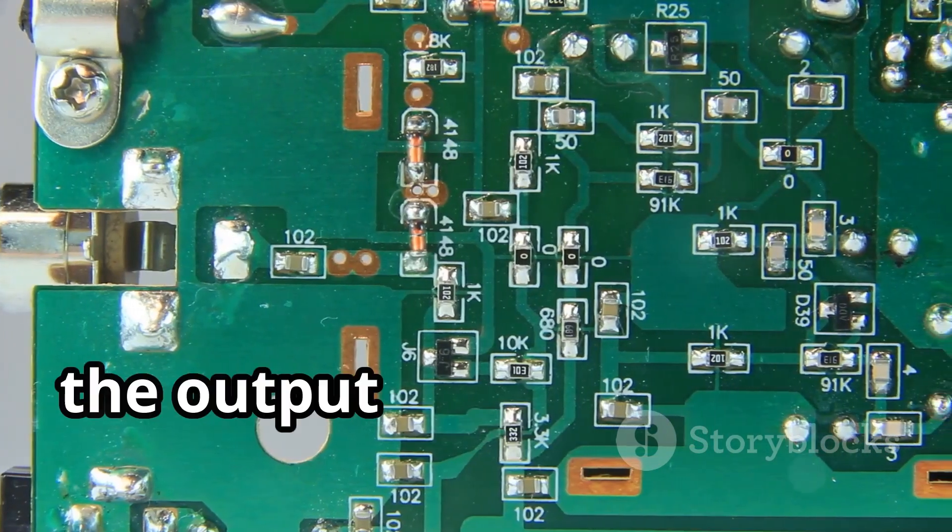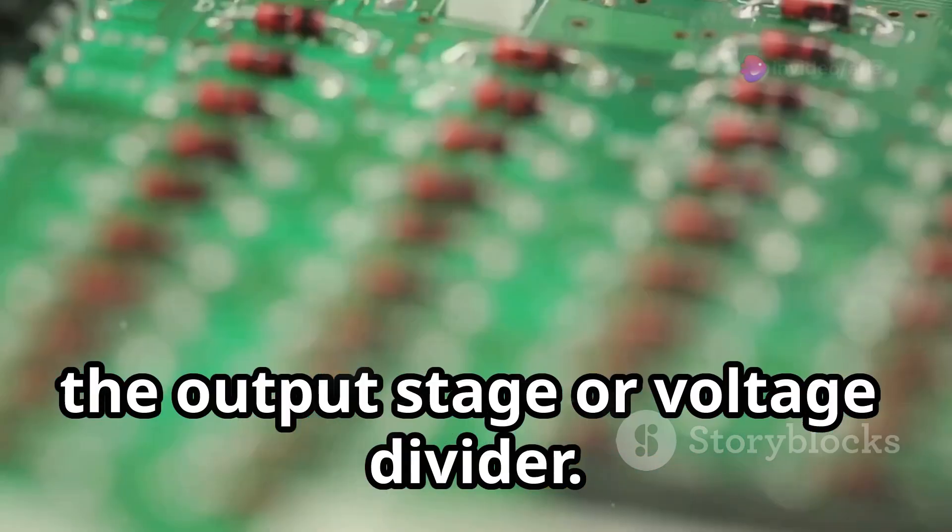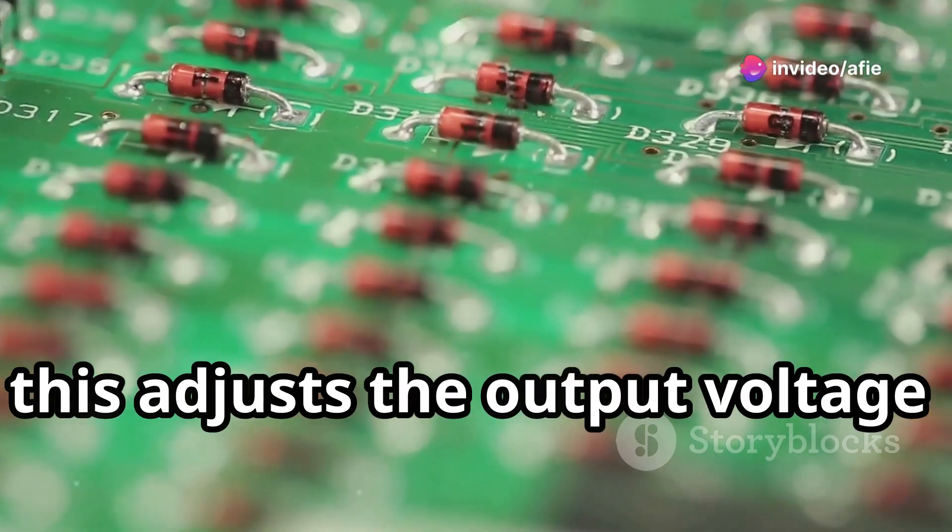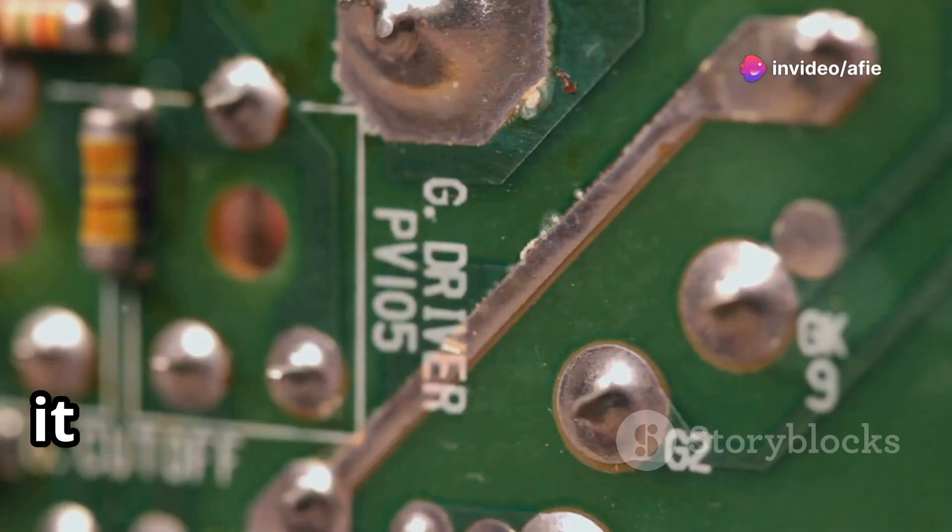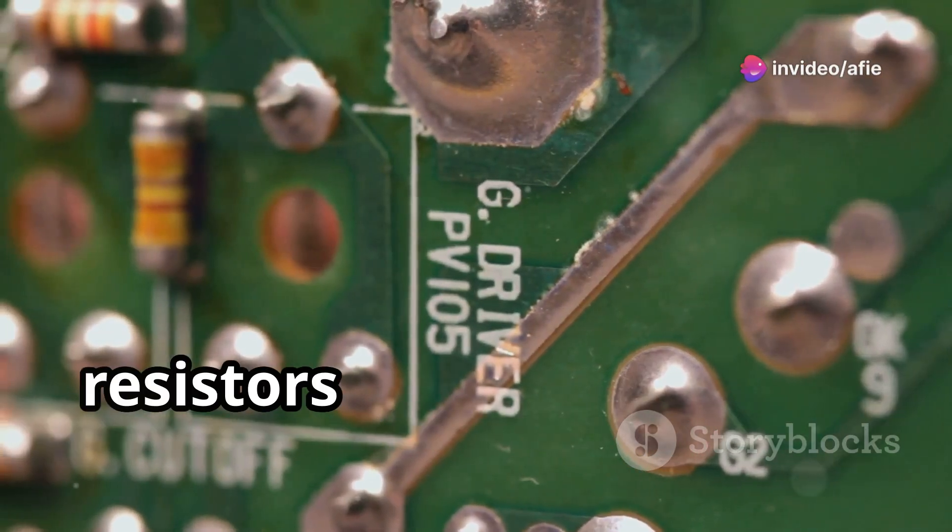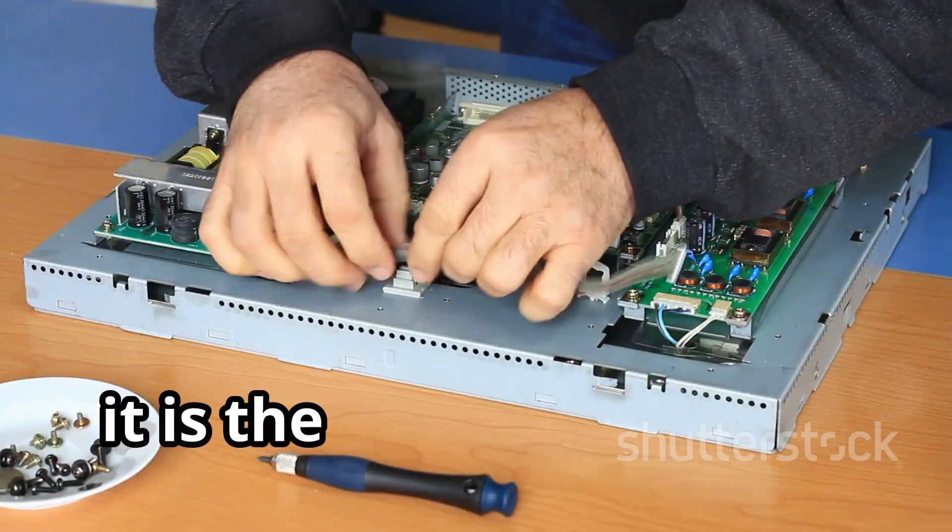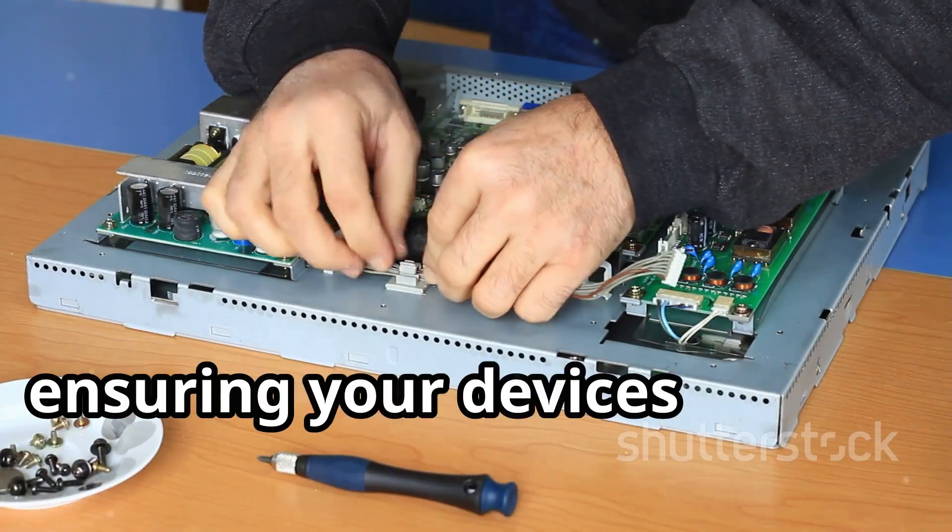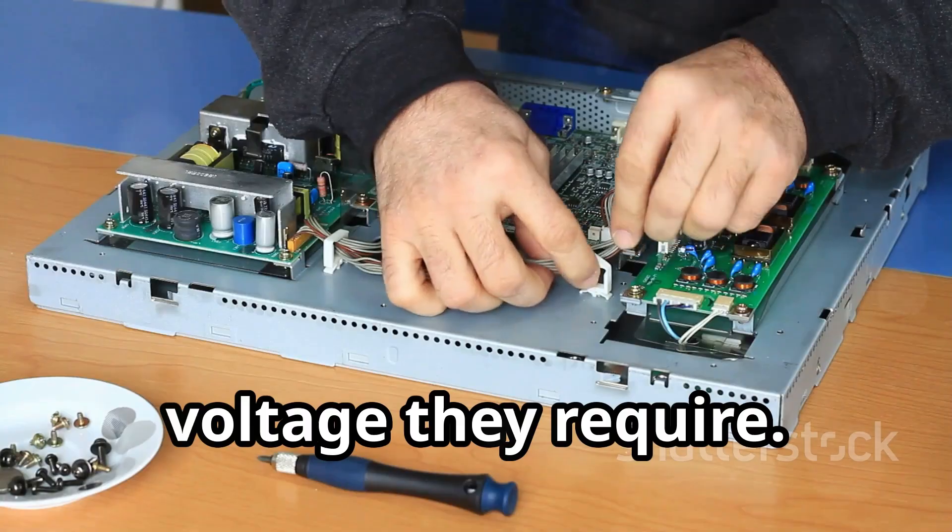Finally, the output stage or voltage divider. This adjusts the output voltage to the desired level. It can be as simple as a pair of resistors or more complex using variable components. It is the final adjustment, ensuring your devices receive the exact voltage they require.